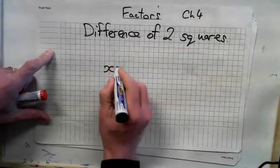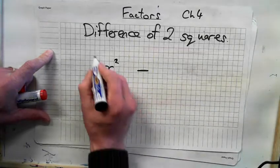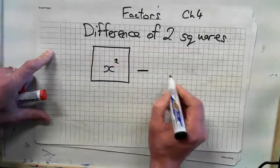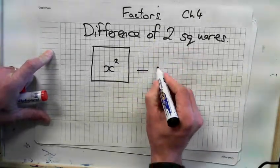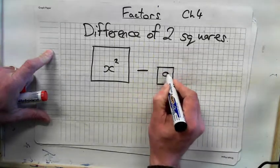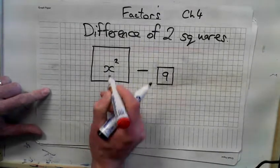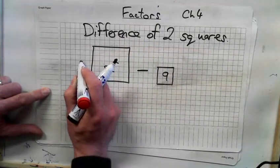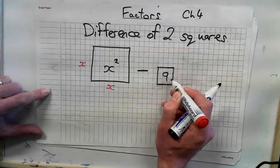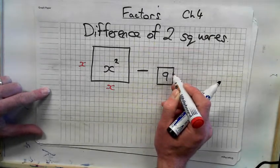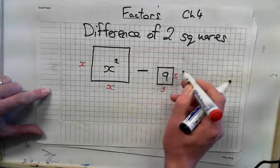So then we had difference of two squares. Difference means minus, doesn't it? Now we had x squared and then we had, let's say, an example we had was nine, which is three by three. So we go three by three. Nine. What do we do now? What do we do? What do I write here? X and? X. X. And what do I write over here, the side of the box? Three.